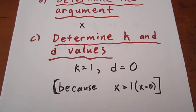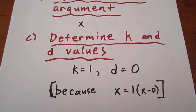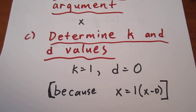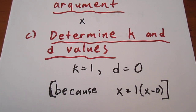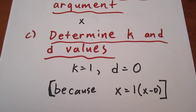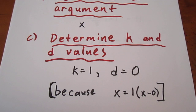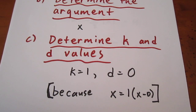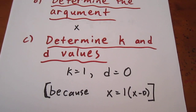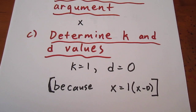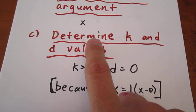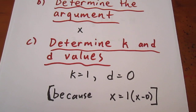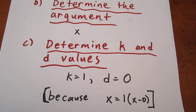To determine the k and d values — sometimes people find that tricky — but really, the default setting for k is 1, and the default setting for d is 0, because k multiplies and d is something that's added to it. The identity for each of those — for multiplying is 1, and for adding is 0. A less technical way of saying it is simply to say x equals 1 times x minus 0. So k is 1, d is 0.